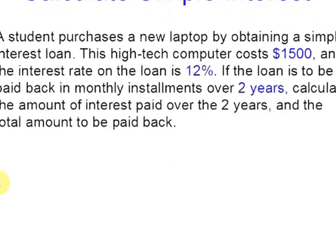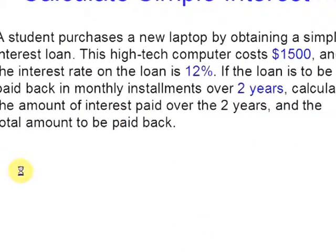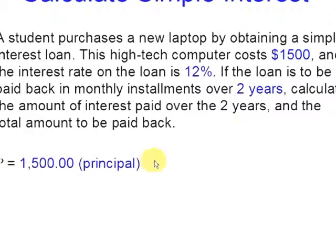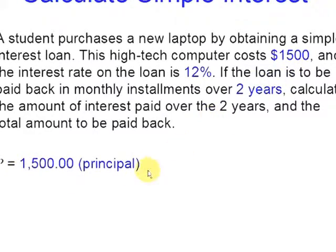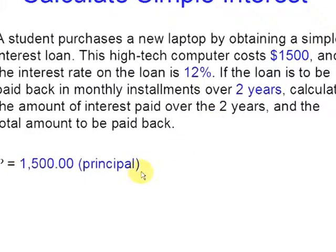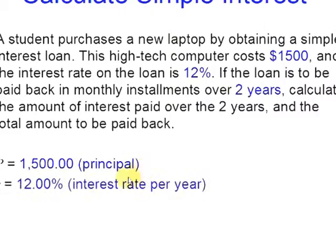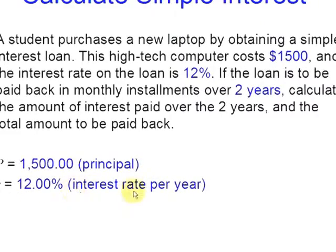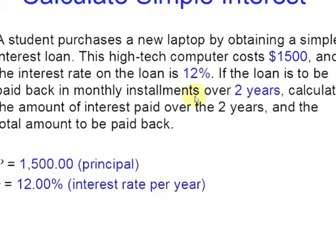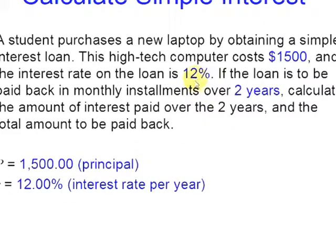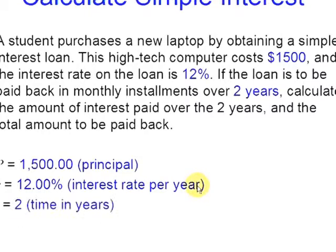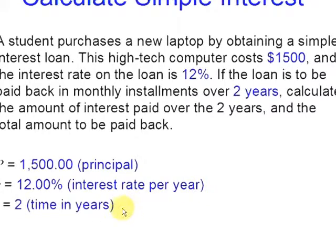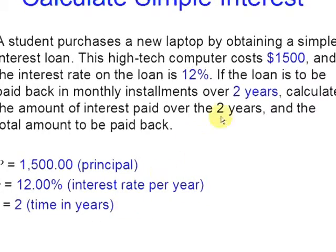So in this case, P — the principal — is $1,500; R — the interest rate per year — is 12%; and T — the time in years — is 2.